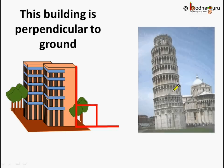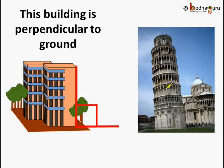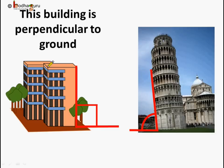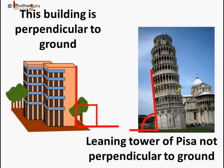Now, which is this building? Can you recognize it? Yes, it is the famous Leaning Tower of Pisa. Do you know how it got its name? If we see the angle, is it a right angle? No, it is not a right angle. So we can say this Leaning Tower of Pisa is not perpendicular to the ground, as it is not making a right angle with reference to the ground.